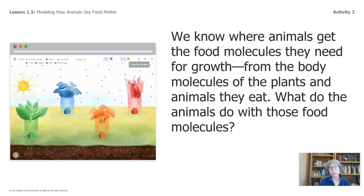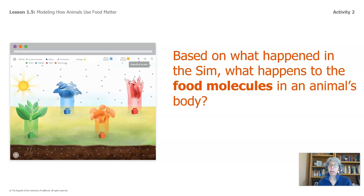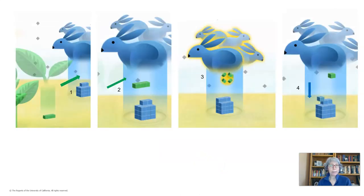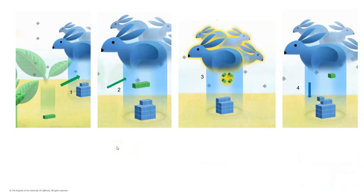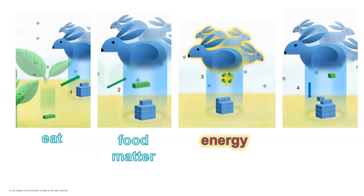We know where animals get the food molecules they need for growth — from the body molecules of the plants and animals they eat. What do the animals do with these food molecules? Based on what happened in the sim, what happens to the food molecules in an animal's body? You might want to go back to the sim and view it again with those questions in mind. As the rabbits eat the plants, they digest the plant matter as food. Food matter becomes energy and body matter. The rabbits use the energy to move and the body matter keeps the rabbits growing and thriving.